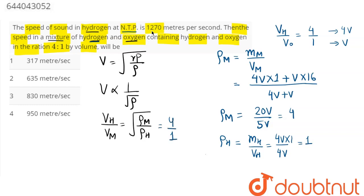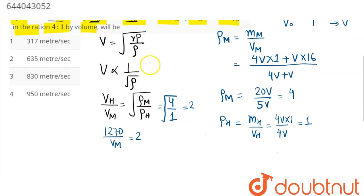So our ratio comes as 4v divided by 1, which is equal to 2. Therefore velocity in hydrogen is 1270 divided by velocity in the mixture comes as 2.